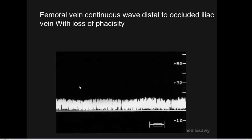This is femoral vein with continuous wave and no phasic changes. What does this mean? It means occluded iliac vein with loss of phasicity. Occlusion of the iliac vein means that intra-abdominal pressure variation is not transmitted down to the femoral vein. If completely occluded, we don't find any flow in the femoral vein. Continuous femoral flow may imply occluded iliac vein with loss of phasicity.